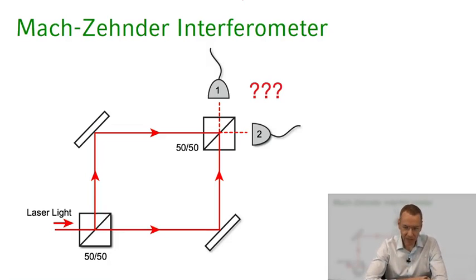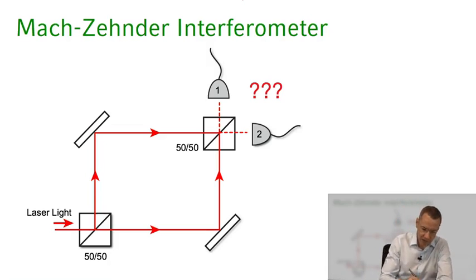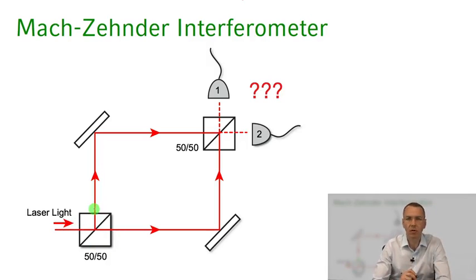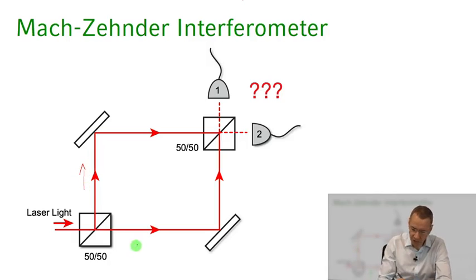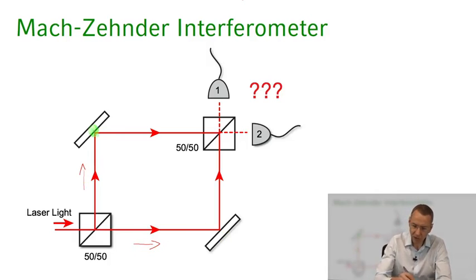This is the classical Mach-Zehnder setup. You have light coming in, there's a 50-50 beam splitter — a non-polarizing beam splitter — which splits the light into two paths: one propagating along this direction and one propagating along this direction. Then there are two mirrors where the light comes along here.